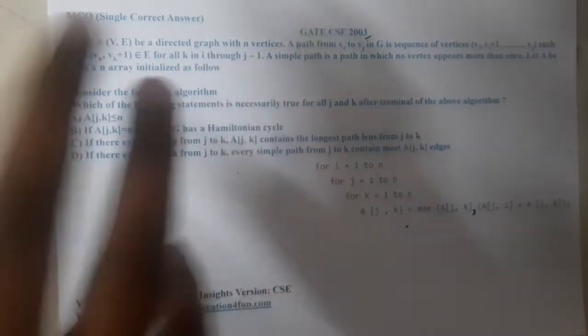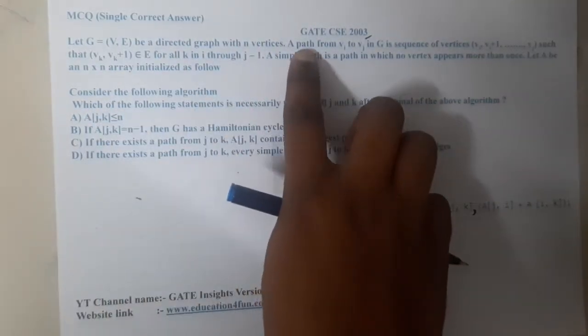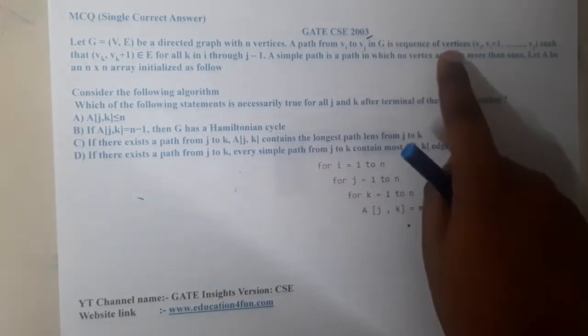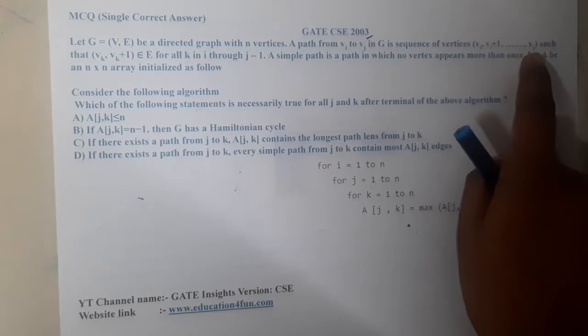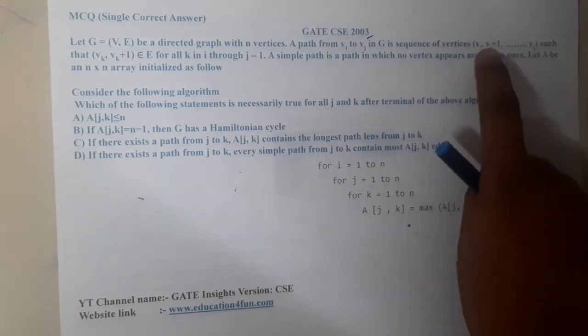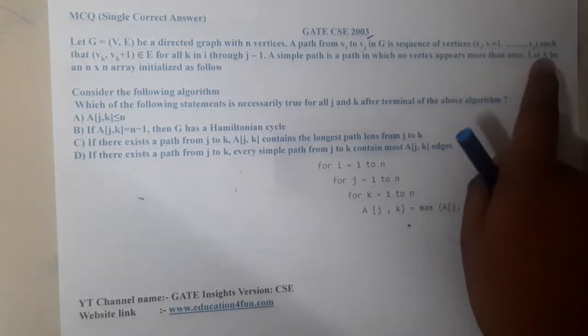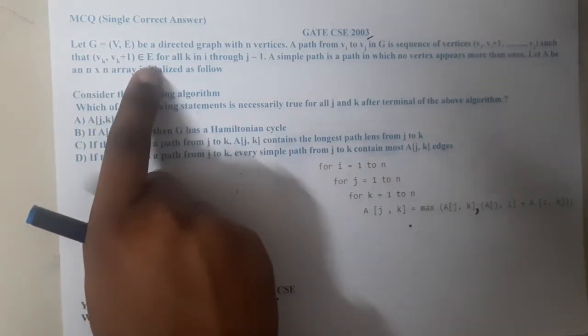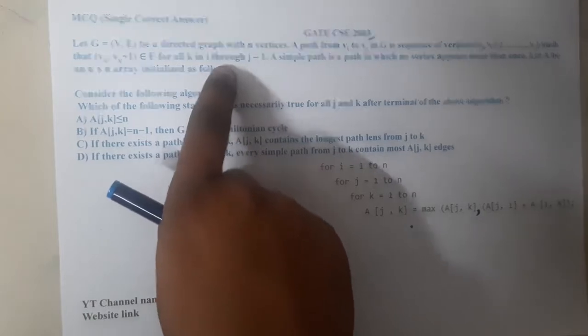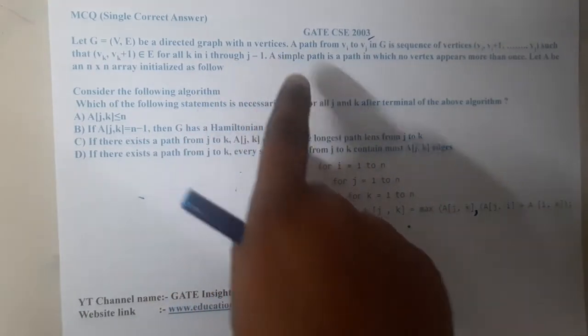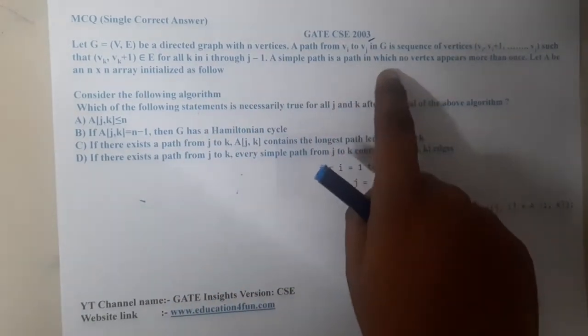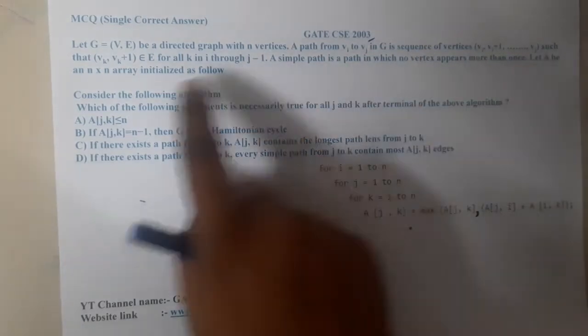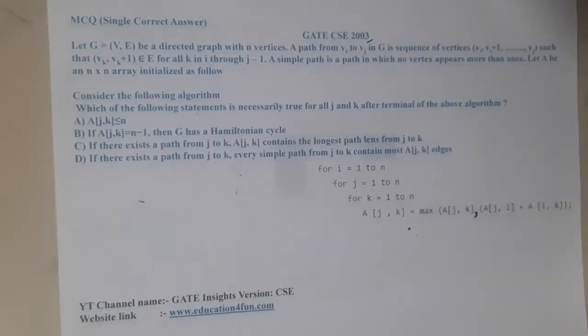A path from vi to vj in G is a directed sequence of vertices vi comma vi plus 1 to vj, such that vk comma vk plus 1 belongs to E for all k in i through j minus 1. A simple path is a path in which no vertices appear more than once. Let A be an n cross n array initialized as follows.